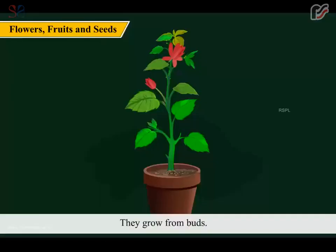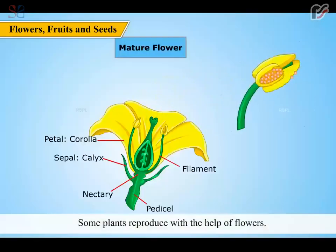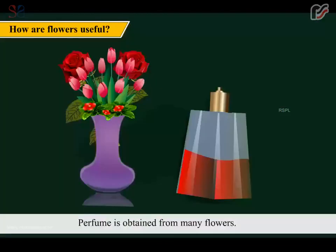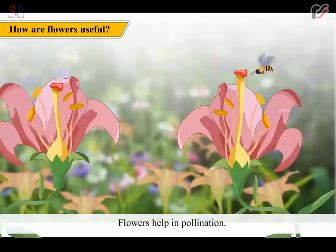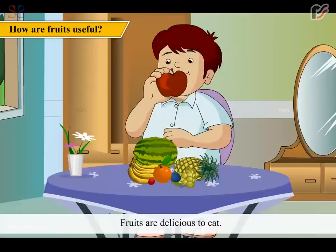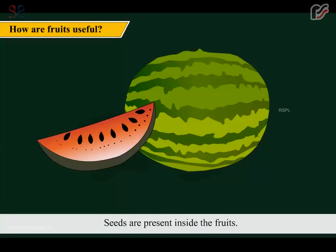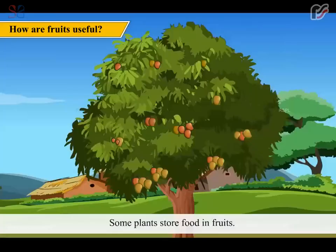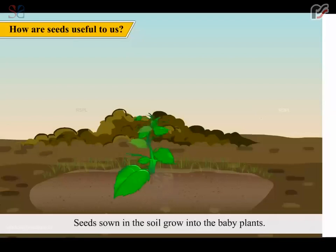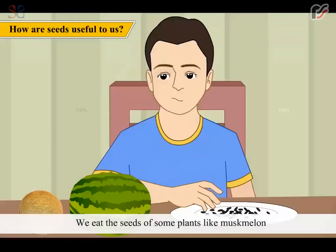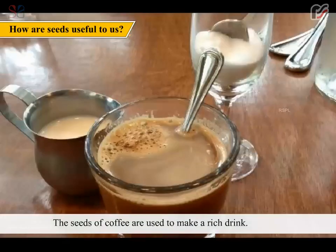Flowers grow from buds. These flowers make plants beautiful. Some plants reproduce with the help of flowers. Flowers make the plants attractive to insects. Perfume is obtained from many flowers. Flowers help in pollination. Some fruits are also obtained from flowers. Fruits are delicious to eat. Seeds are present inside the fruits. Some fruits have only one seed, whereas some other fruits have many seeds. Some plants store food in fruits. Seeds sown in the soil grow into baby plants. We eat the seeds of some plants like muskmelon and watermelon. They are very nutritious. The seeds of coffee are used to make a rich drink.